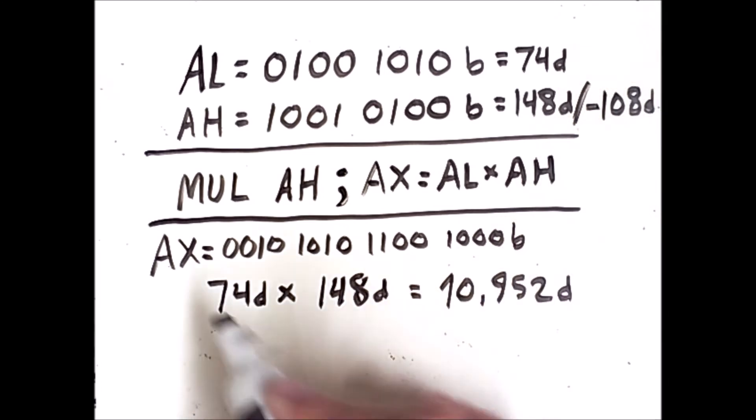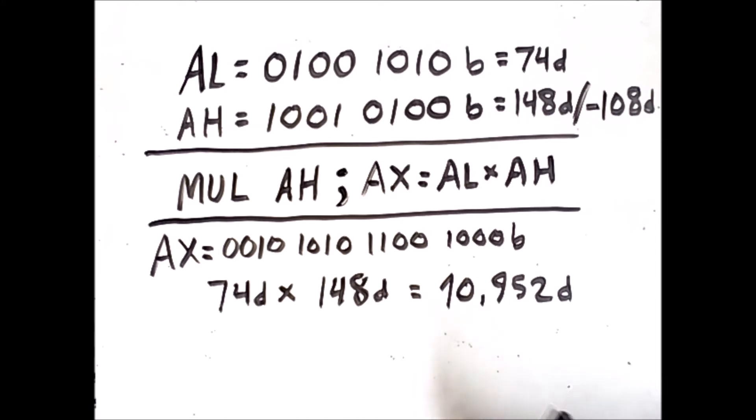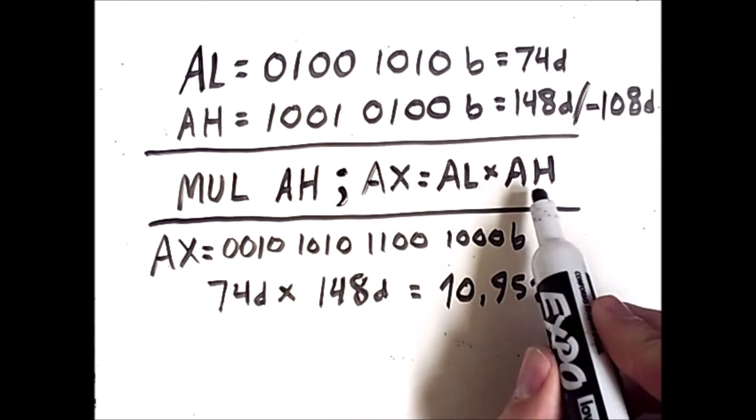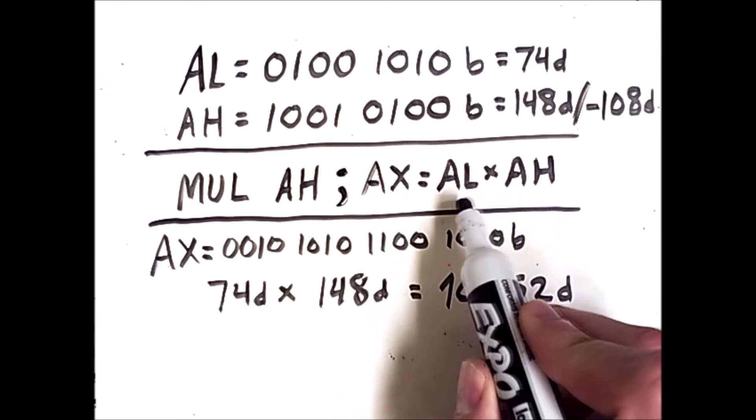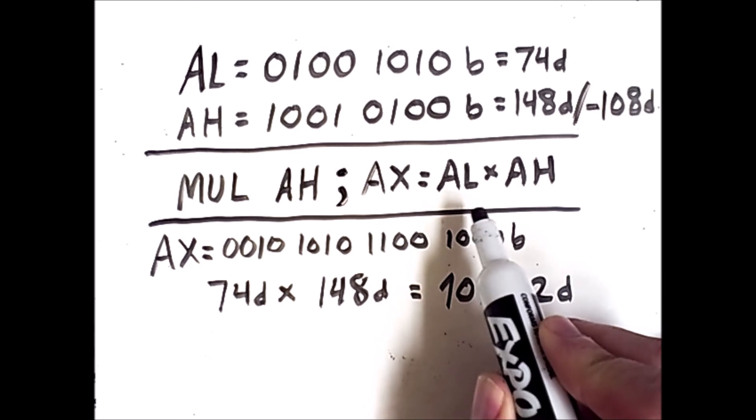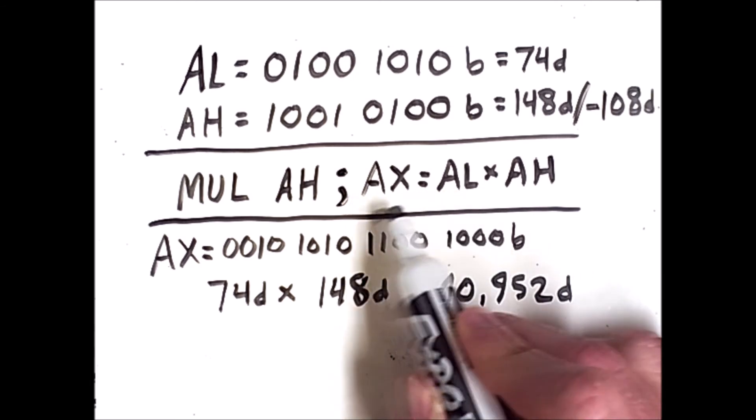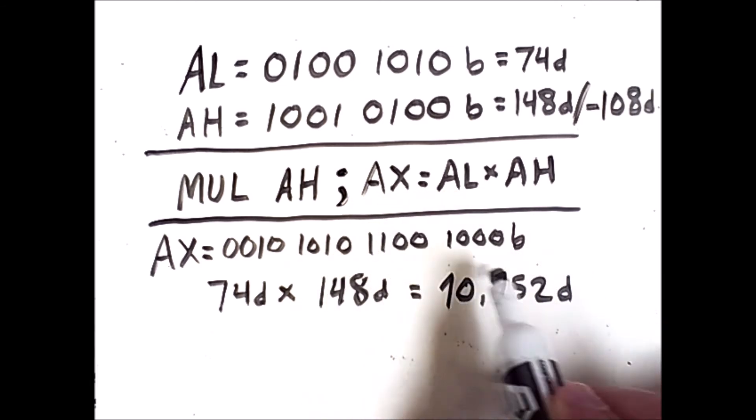Well, the reason is that the MUL command specifically applies to unsigned multiplication. That means it will interpret the operands AH and the implicit operand AL as being unsigned numbers, and the result stored in AX will also be an unsigned number.